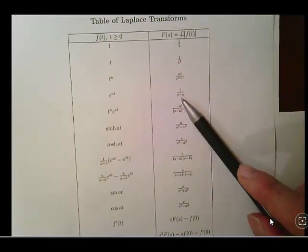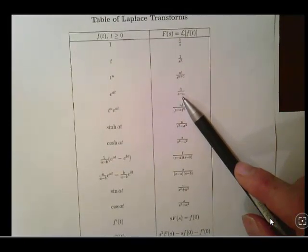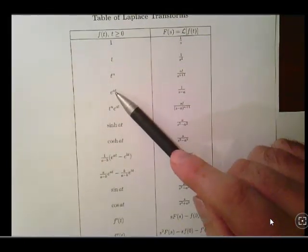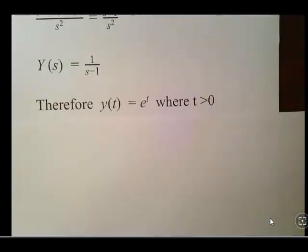I'll just bring up the Laplace transforms there. It's a little bit hard to read. But if you actually just get my PDF copy, you'll see that A is equal to 1. And therefore, the inverse Laplace transform is E to the T.